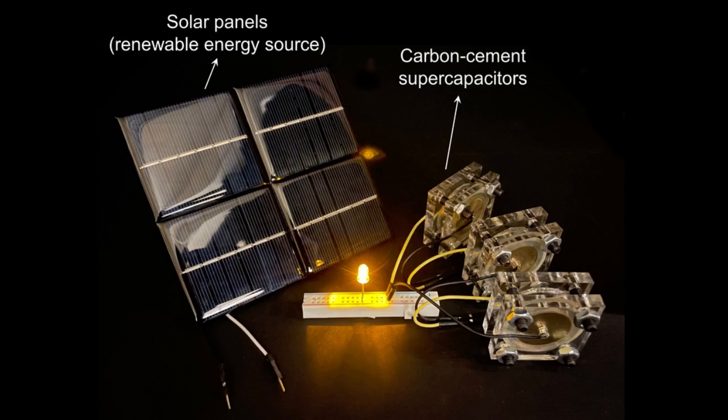Two electrodes made of this material, separated by a thin space or an insulating layer, form a very powerful supercapacitor, the researchers found. The two plates of the capacitor function just like the two poles of a rechargeable battery of equivalent voltage. When connected to a source of electricity, as with a battery, energy gets stored in these plates, and then when connected to a load, the electrical current flows back out to provide power.